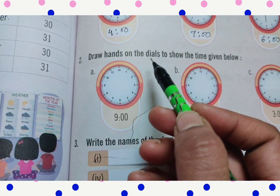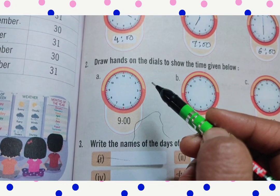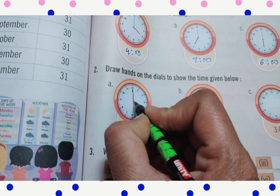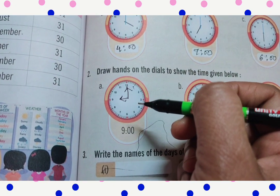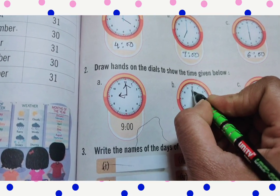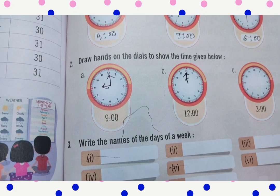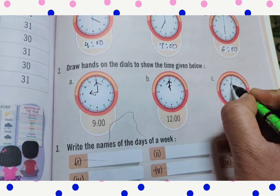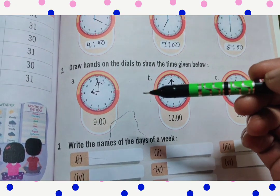Question 2: Draw hands on the dials to show the given time. For 9 o'clock, draw the minute hand on 12 and the hour hand on 9. For 12 o'clock, the minute hand is on 12 and the hour hand is also on 12. For 3 o'clock, the minute hand is on 12 and the hour hand is on 3.